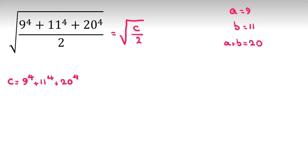Now, I want to calculate C. If I want to replace 9 with A and 11 with B, it will be A to the 4 plus B to the 4, and 20 is A plus B to the 4. So let's calculate it. A plus B to the 4 is what? You should know binomial theorem. And by binomial theorem, let me tell you.